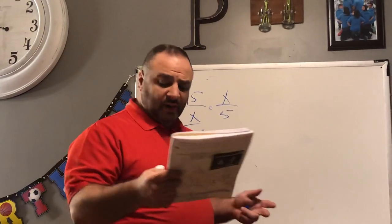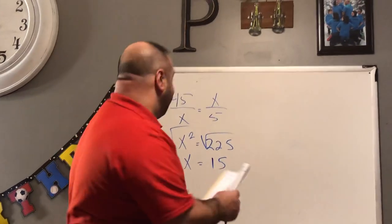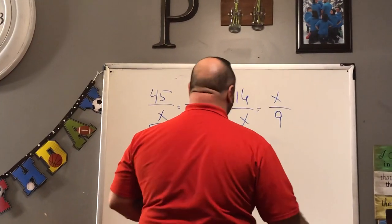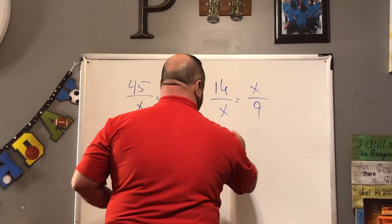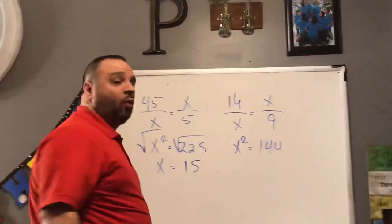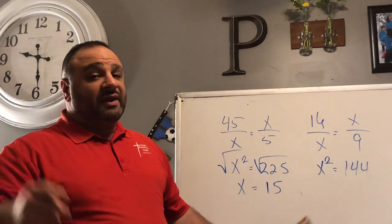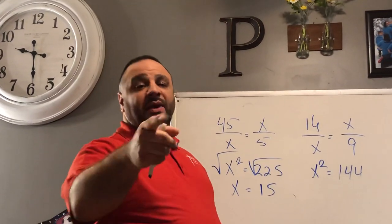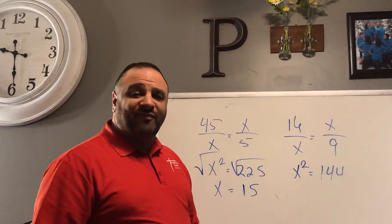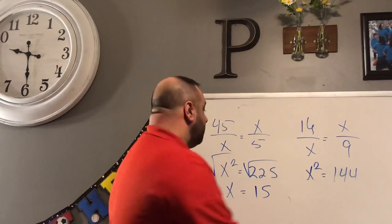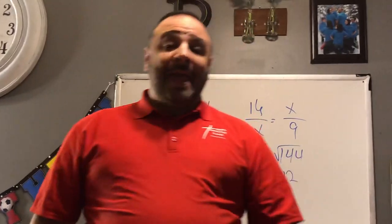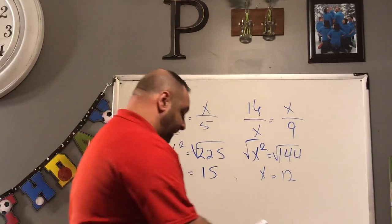Let's do one more — number 10. The two extremes are 16 and 9. x squared equals 16 times 9, which is 144. To remove the exponent, find the square root of both sides. Chris Rob, go ahead — x equals 12. 12 is the geometric mean. If you have any questions, contact me through the Remind app.